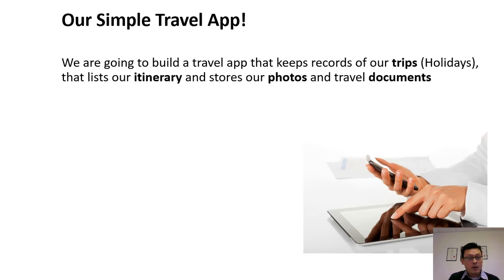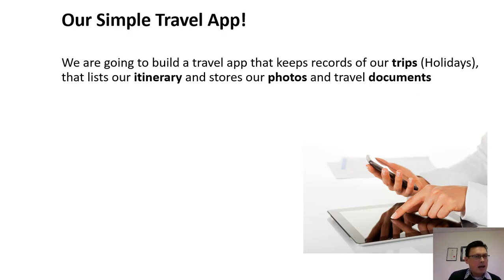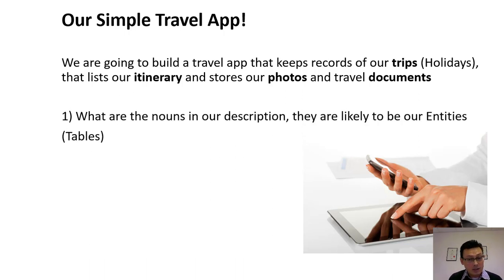In our little project here — a simple travel app — the first thing you need to do is literally write out what it is you're going to build. We're going to build a travel app that keeps records of our trips. In Australian English, that means holidays. It lists our itinerary, which is made up of days, and stores our photos and travel documents. When we've described that, we look for the nouns in that description, because the nouns are likely to become our entities.